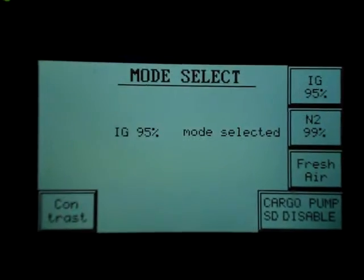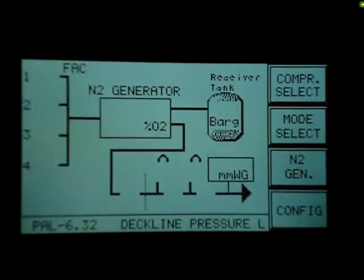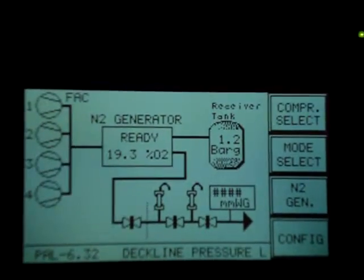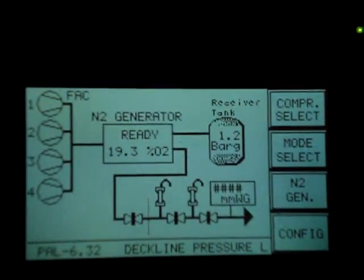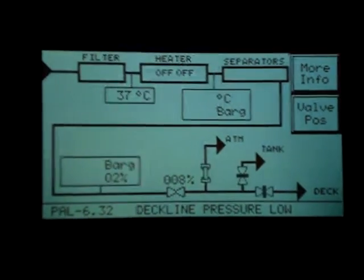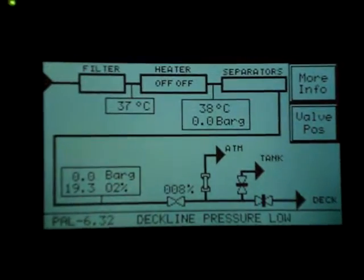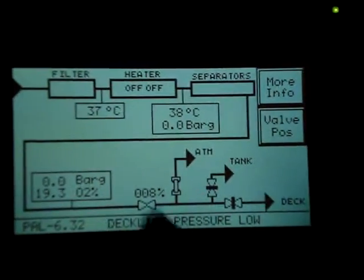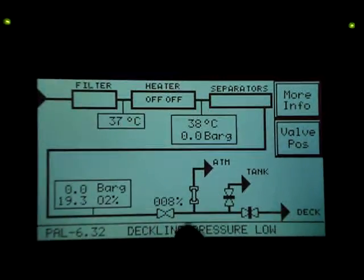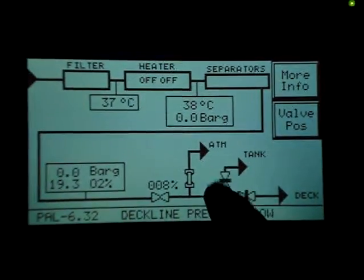You have to press main. So this is the main screen. So in the main screen, you have to go to N2 generator. Once you come here, this is the screen where you have the filter, heater, separator. And ultimately, you have got these valves showing where the N2 is going.